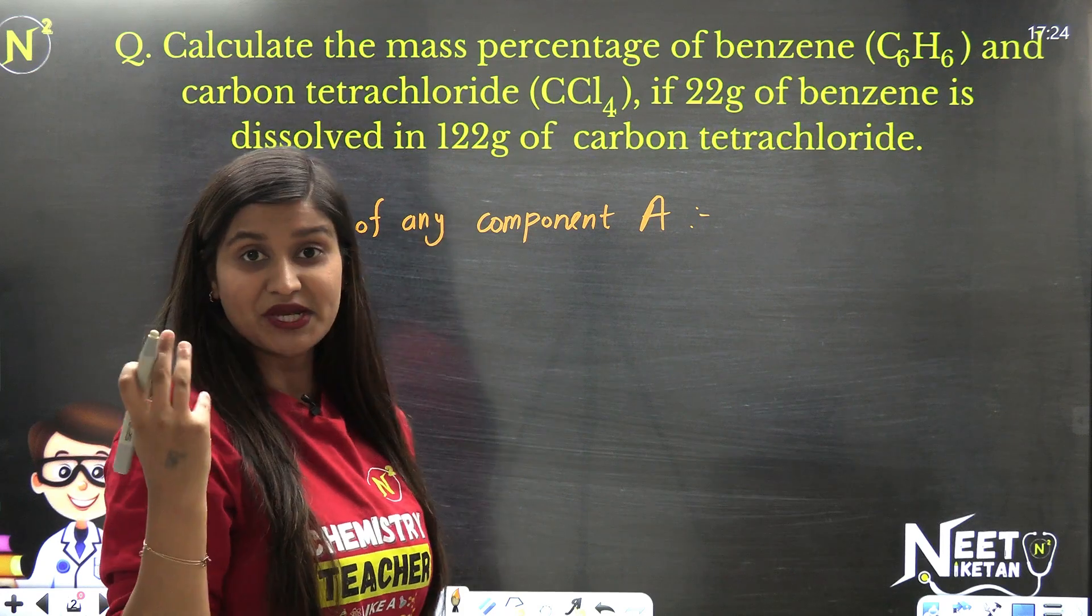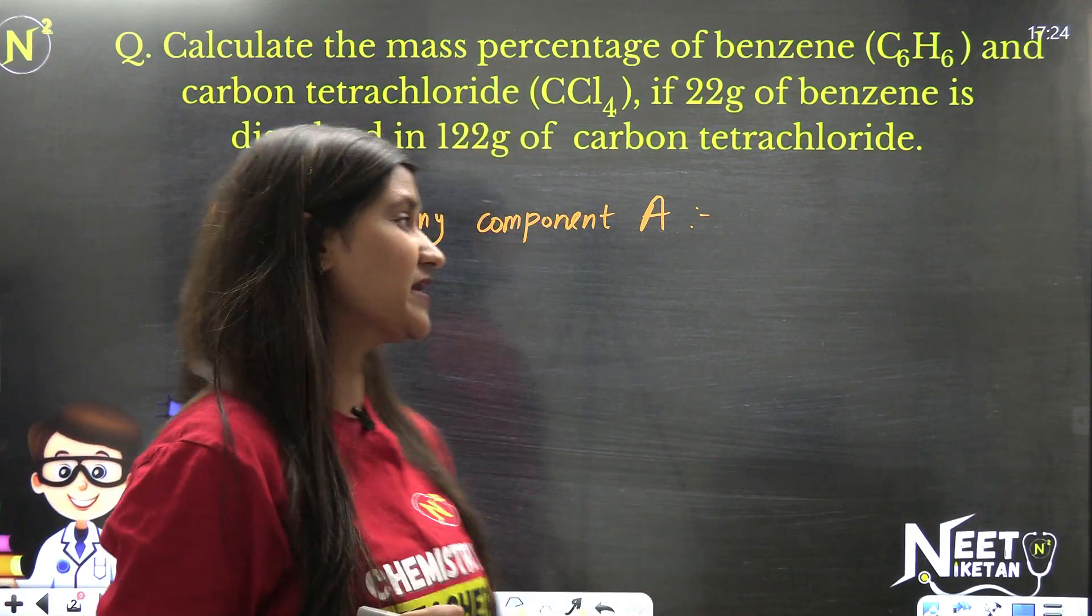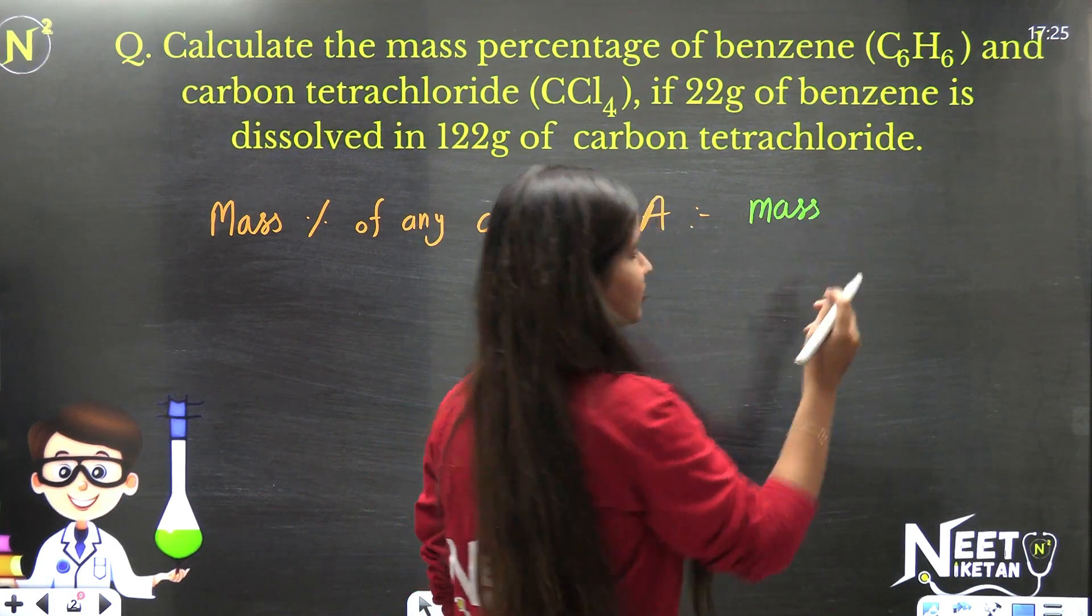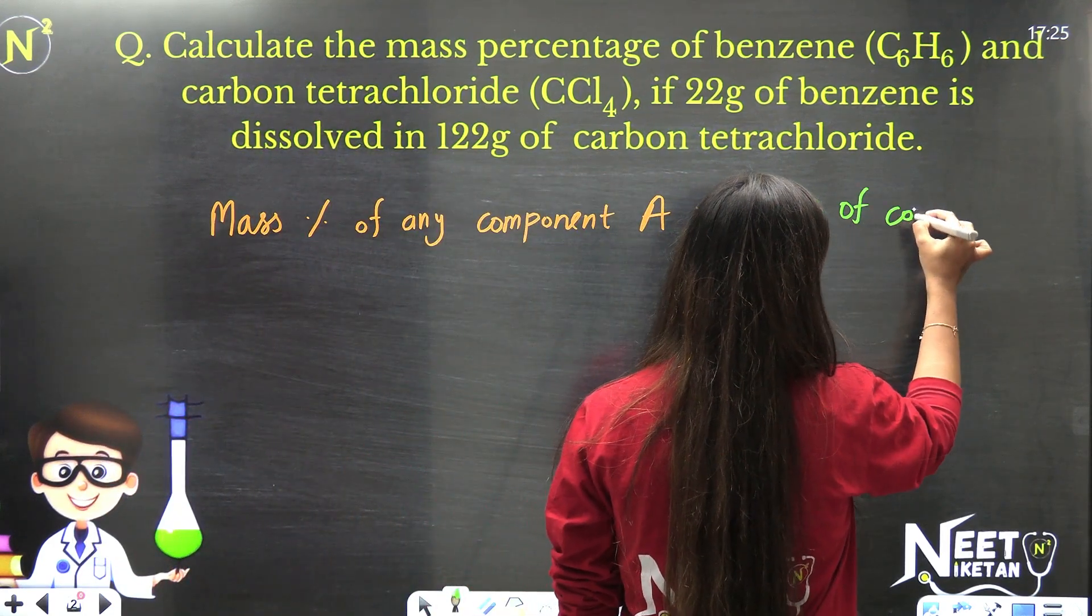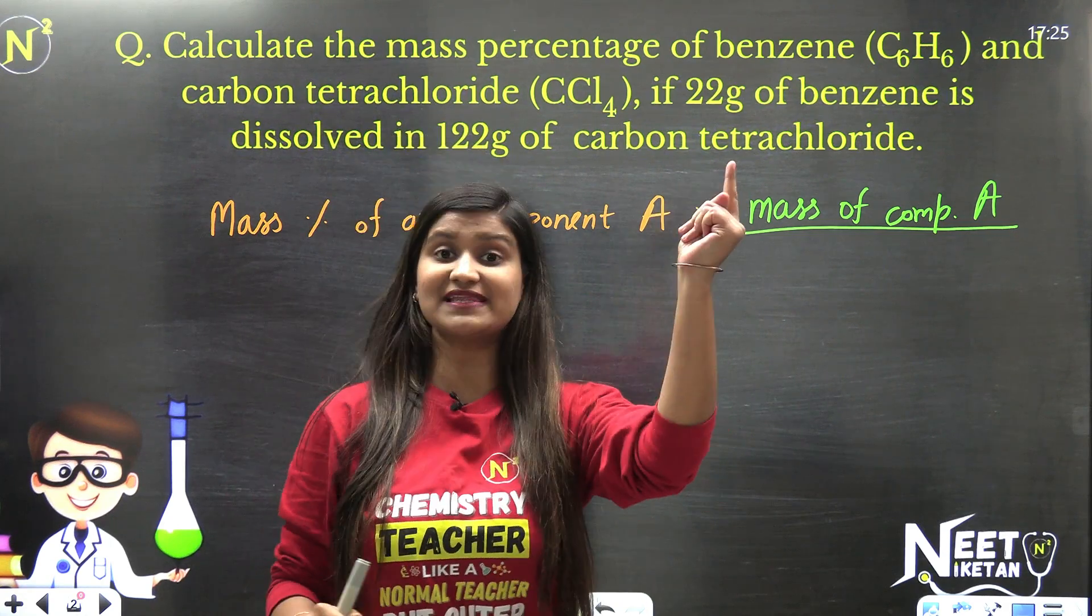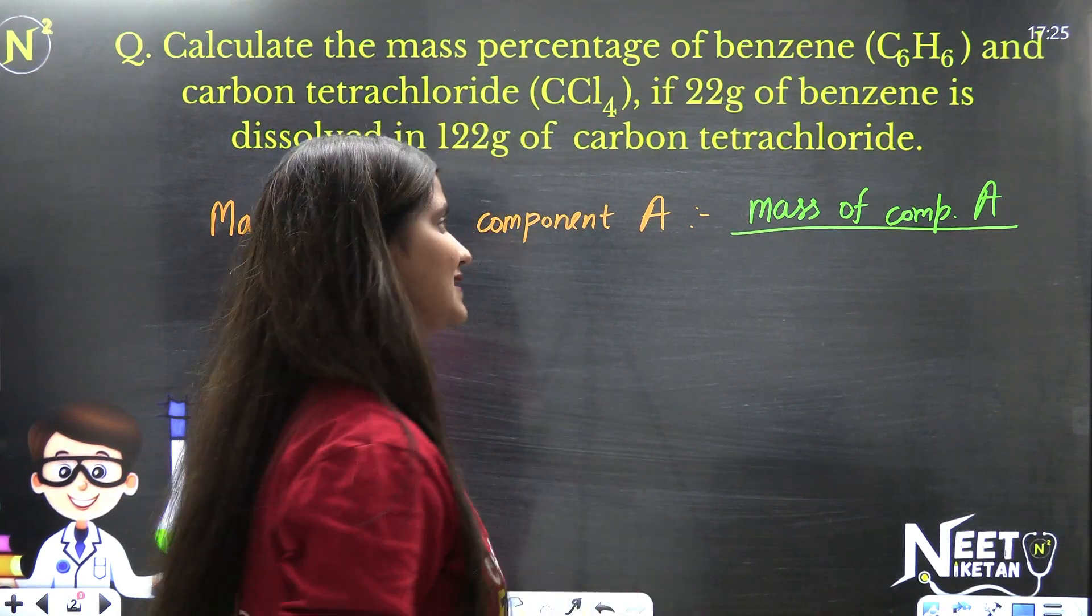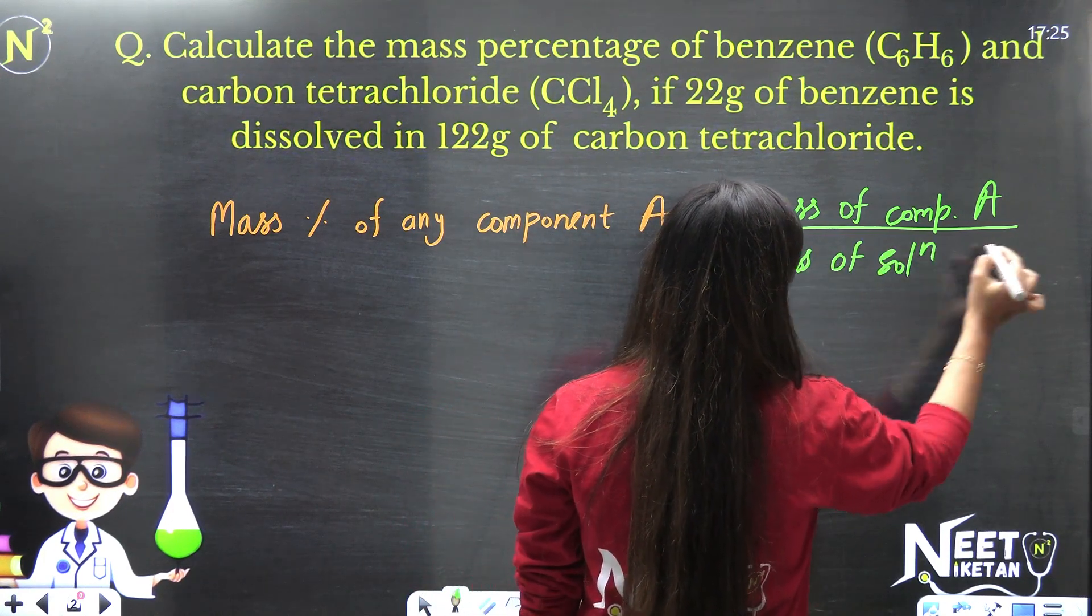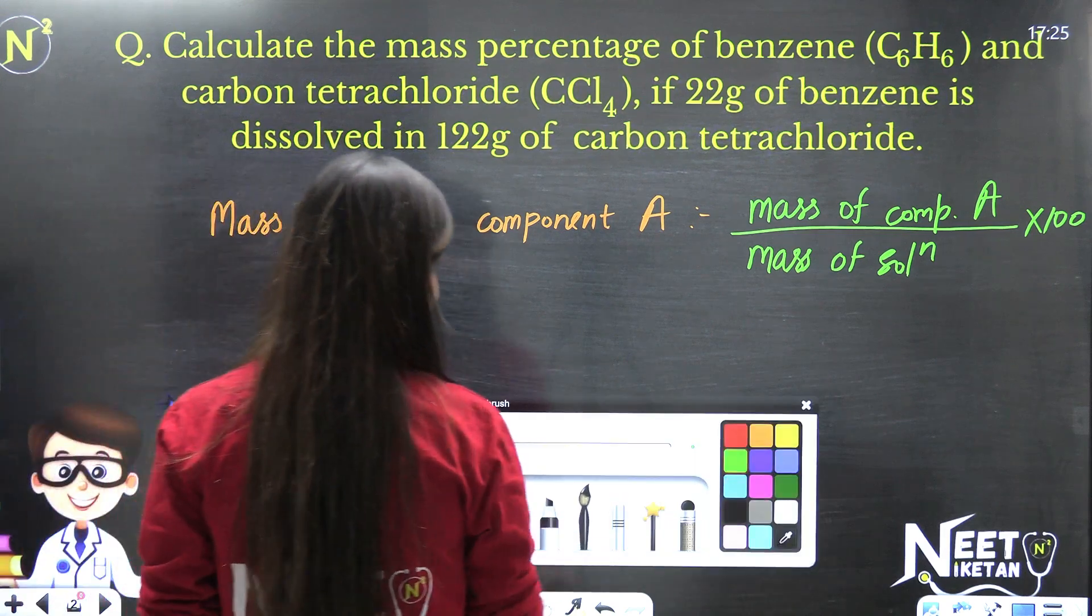Let's talk about mass percentage of any component A. How do you do that? Mass of component A over mass of solution, multiplied by 100.